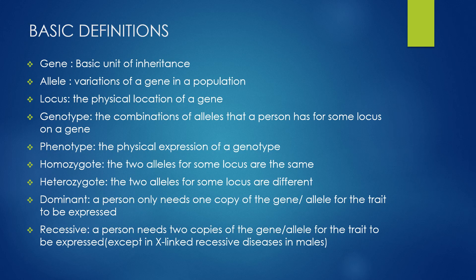Let's take a look at some basic definitions. The first is gene — that is the basic unit of inheritance. We have an allele, that is the different variations of a gene in a population, basically the different ways in which one particular gene can be expressed. Then we have locus, that is the physical location of a gene.